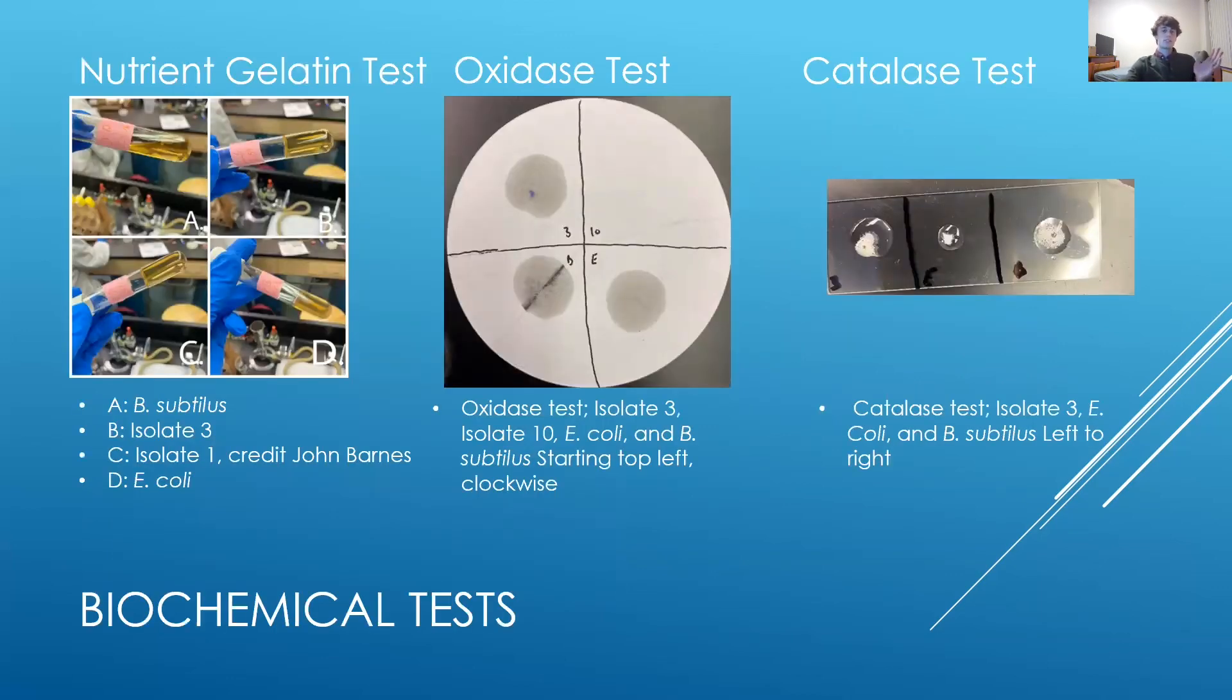The final steps of the experiment were the biochemical tests. Three biochemical tests were performed: nutrient gelatin test, an oxidase test, and a catalase test. The nutrient gelatin test was performed in four separate test tubes for each bacteria.